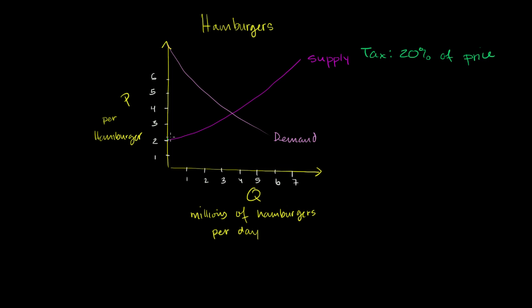But from the consumer point of view, they can't just pay $2 for it. They're going to have to pay $2 plus 20% of the $2. So 20% of $2 is $0.40. So from the consumer's point of view, I'll do it in blue, they're going to have to pay about $2.40.